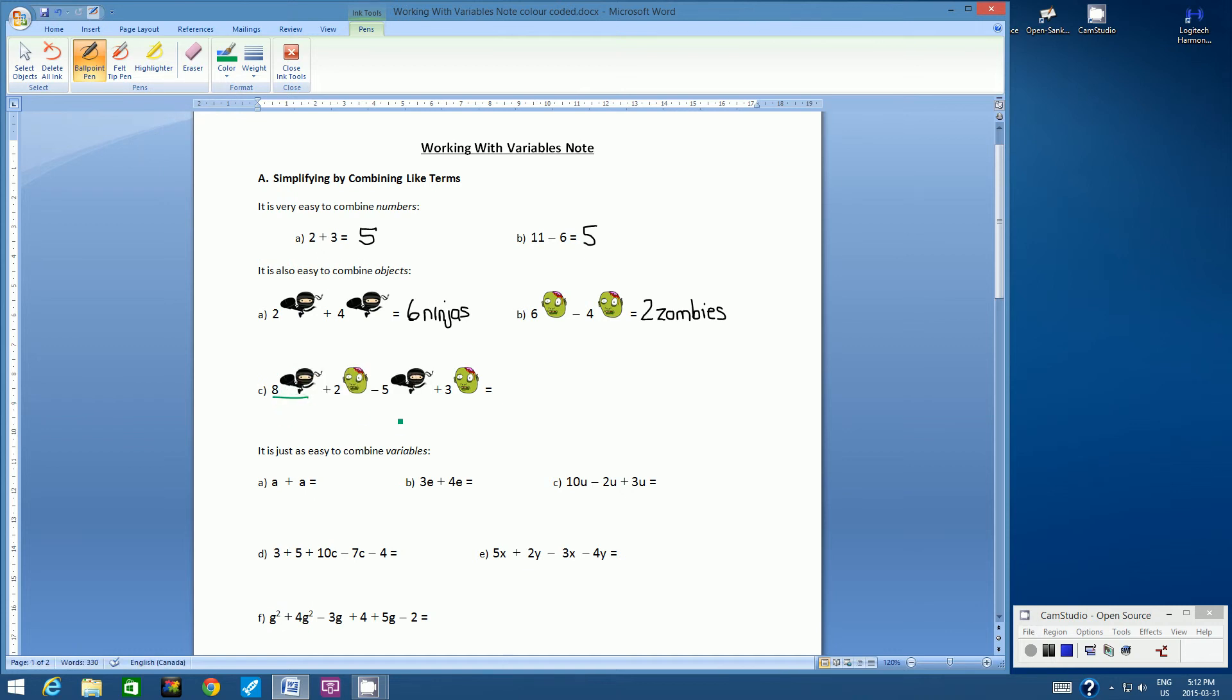So if I look at the ninjas first, I've got positive 8 ninjas and then I've got subtract 5 ninjas. So, if I were to combine these two, and these are called like terms.